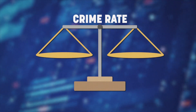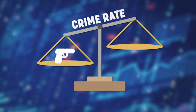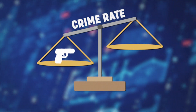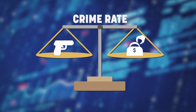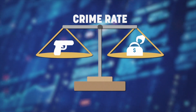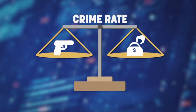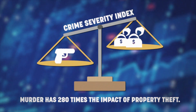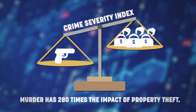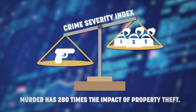So, if a very serious crime like murder or robbery experiences a change in volume, the impact on the CSI will be more significant than the impact on the crime rate. By contrast, changes in less serious crimes such as mischief, minor theft, or disturbing the peace will have less impact on the CSI than on the crime rate.